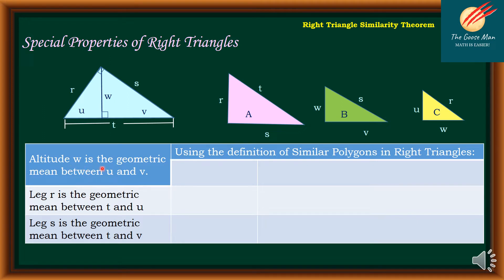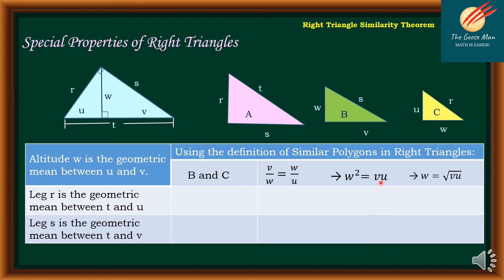Altitude W is the geometric mean between U and B. We will use the definition of similar polygons. Considering areas B and C, the ratio is B over W equals W over U. Using cross-products, W squared equals BU. So, W is equal to the square root of BU.